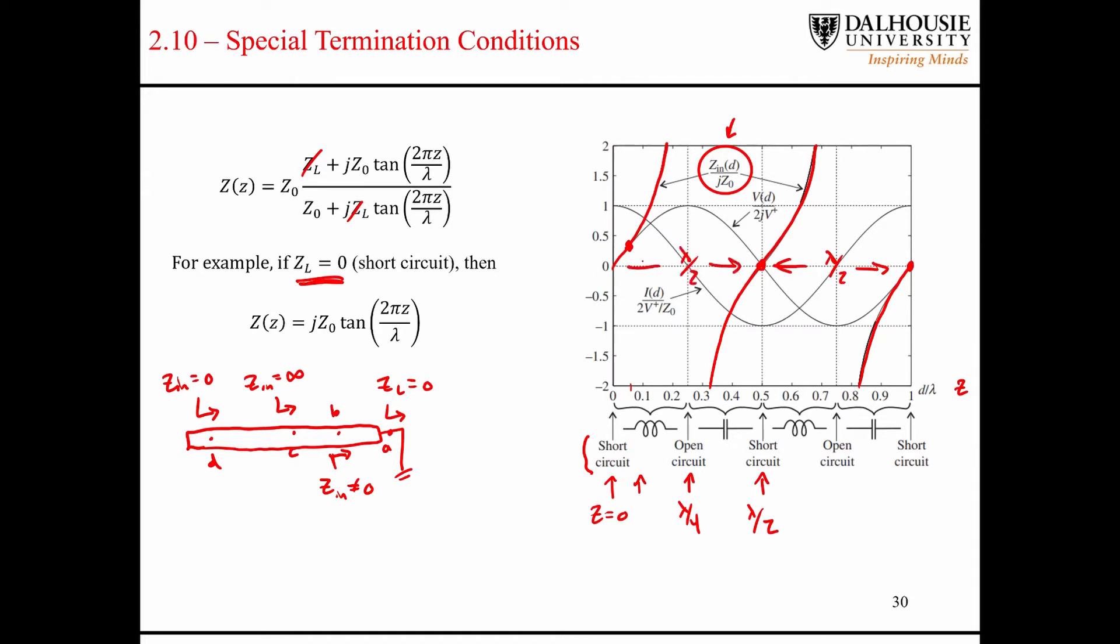So you can see that it repeats itself every half a wavelength. So that's all I'm trying to show here. I know that there's three plots on here. It's somewhat, it obstructs what we're trying to see here in terms of the transformation of the impedance along the transmission line.